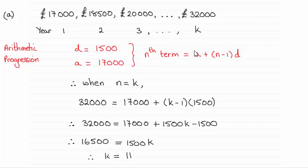So I've put that at the beginning of our equation here. And then we've got A, the first term £17,000, plus what would normally be N minus 1 but is now K minus 1, times the common difference of 1500.